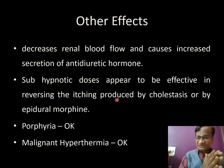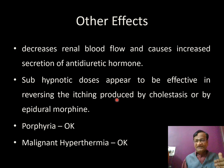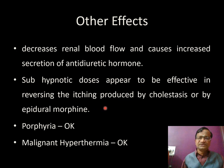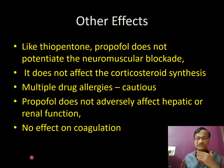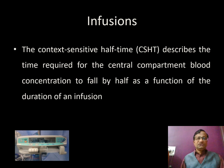Regarding other systems: propofol decreases renal blood flow and increases ADH secretion. It reverses itching from epidural morphine. It is safe in porphyria and in malignant hyperthermia. Like thiopentone, it does not affect vecuronium, steroids, hepatic function, or coagulation.